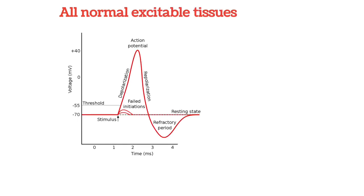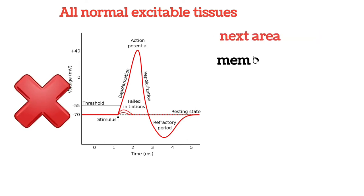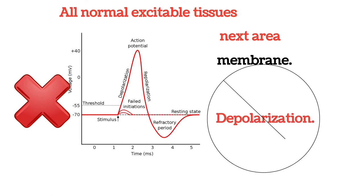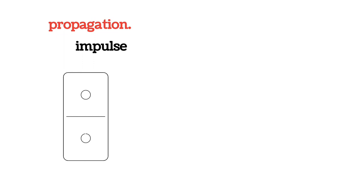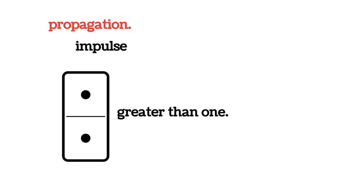Occasionally, the action potential reaches a point on the membrane at which it does not generate sufficient voltage to stimulate the next area of the membrane. When this situation occurs, the spread of depolarization stops. Therefore, for continued propagation of an impulse to occur, the ratio of action potential to threshold for excitation must at all times be greater than one. This greater than one requirement is called the safety factor for propagation.